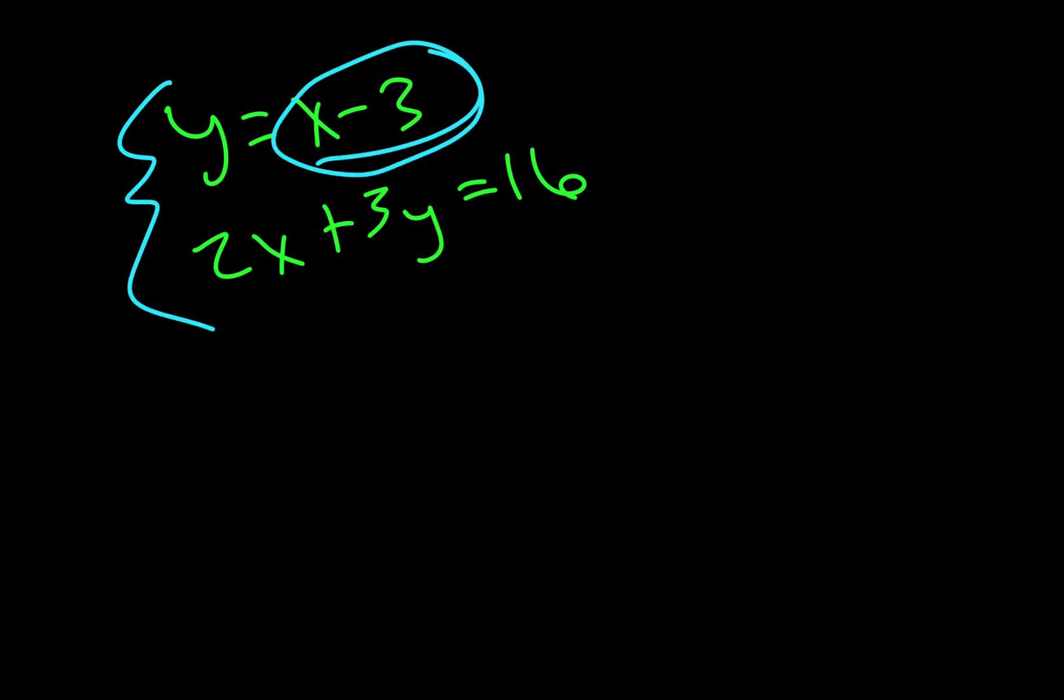All right, so now we're going to move on to example 10. And this time it wants us to solve simultaneous equations by the substitution method. So the substitution method is just what it sounds like. We're going to solve one of the equations for something, and then we're going to plug it into the other one. Since this is already solved for y, I'm just going to use this equation and then plug it in right here for y.